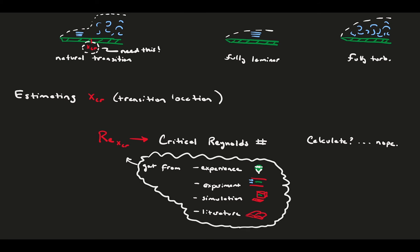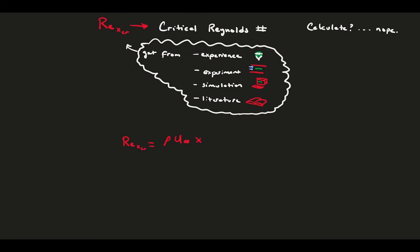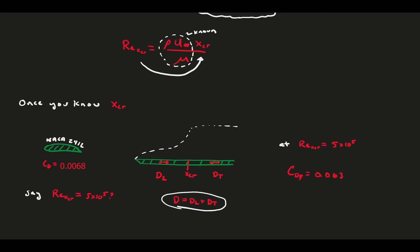Once we've obtained it, by definition the critical Reynolds number will tell us the critical x value, since all other quantities in the equation are known. Then, with the critical x value, we can get to the viscous drag. To do this, you need to calculate the drag on the laminar portion of the plate and the turbulent portion, and add them up. At this Reynolds number, we would estimate a drag due to friction of 0.0062, which is quite close to the real thing.